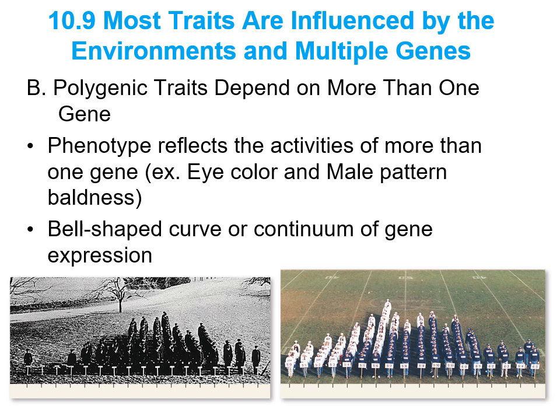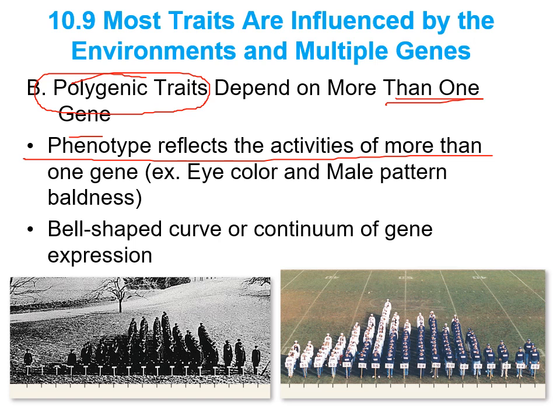The last thing I want to mention for this chapter: we mentioned pleiotropy, which was one gene determining multiple phenotypes. This one is going to be polygenic. A polygenic trait is when you have a trait that is dependent on more than one gene — the phenotype reflects the activities of multiple genes working together. Things like our eye color, hair color, skin color, height, and muscle composition all follow under a polygenic trait, where we rely on the interactions of many of our genes to create the diversity we see in all our different phenotypes.